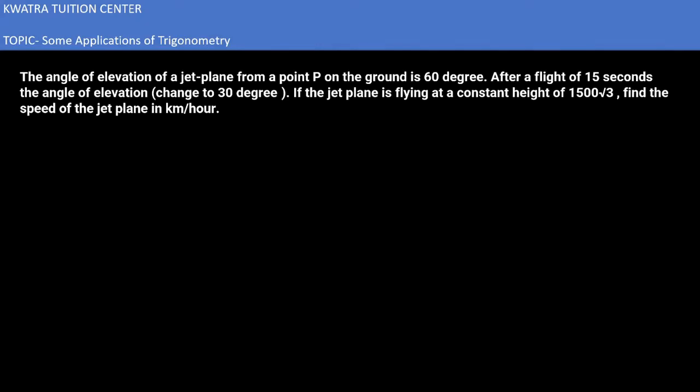Let's start with question number 5. It says the angle of elevation of a jet plane from a point P on the ground is 60 degrees. Then it says after a flight of 15 seconds, the angle of elevation changed to 30. If the jet plane is flying at a constant height of 1500 root 3, find the speed of the jet plane in km per hour.